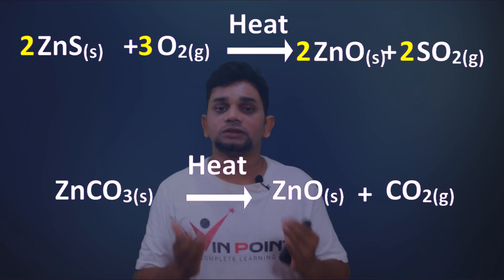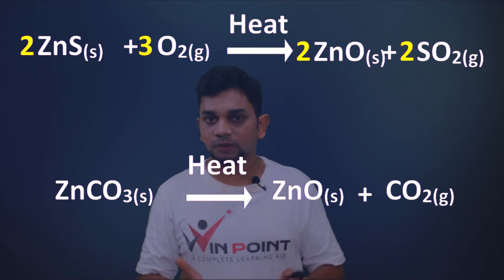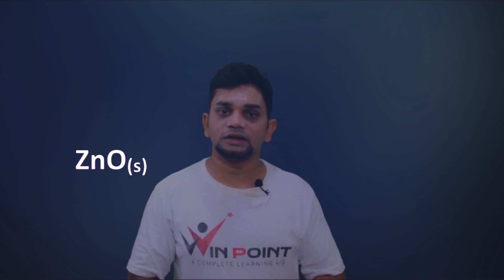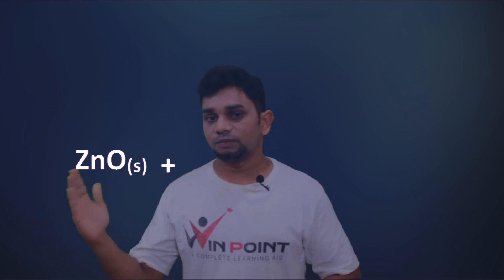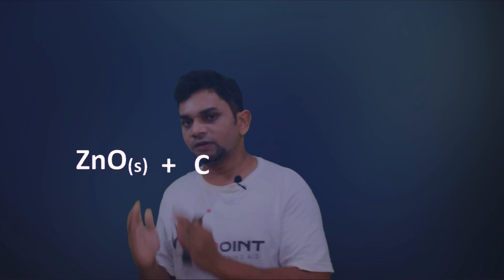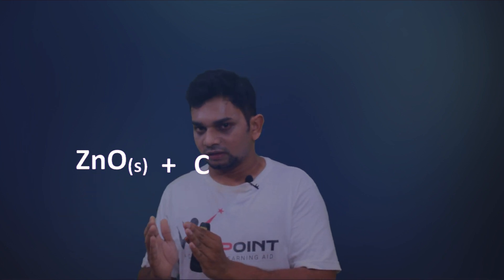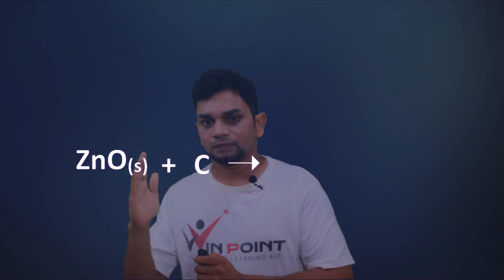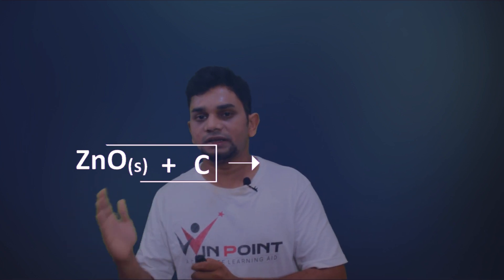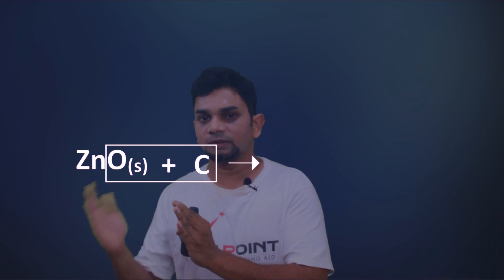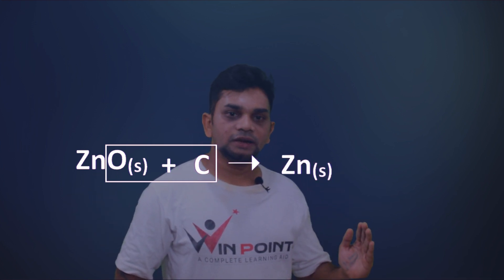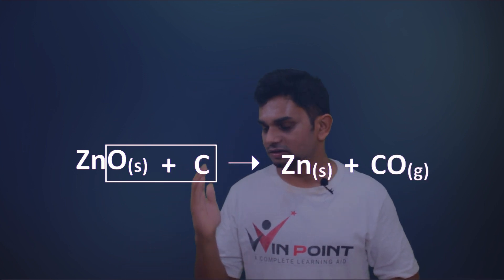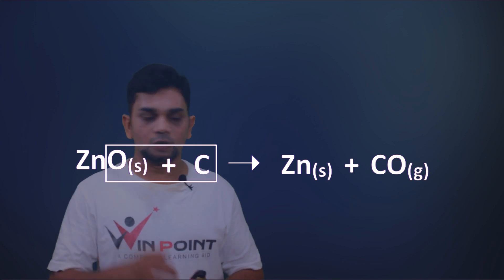We then take this zinc oxide and reduce it to get zinc. The reduction takes place with the help of carbon. When zinc oxide reacts with carbon (ZnO + C), the carbon and oxygen combine to form CO, giving the products zinc and carbon monoxide. This reaction is known as reduction using carbon, and we obtain zinc metal.